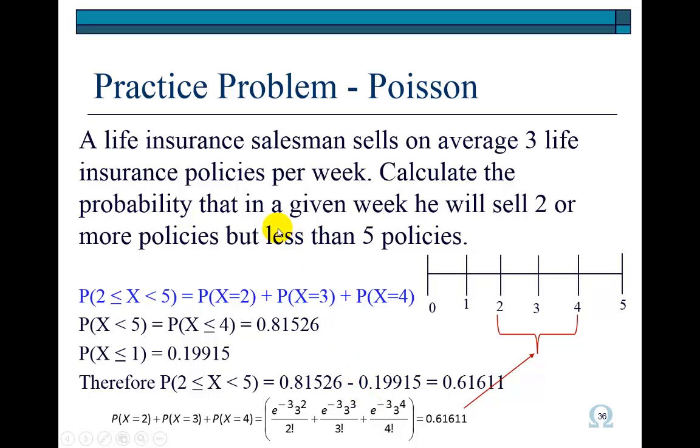Here's a quick practice problem. It says a life insurance salesman sells, on average, 3 life insurance policies per week. Calculate the probability that in a given week he will sell 2 or more policies but less than 5. Well, 2 or more, that's x greater than or equal to 2. However, x has to be less than 5. So expanded out, 2 or more would be x can take on the value of 2, 3, 4. However, we can't go further because it says x less than 5. So we can calculate these four probabilities individually, which is what I did right here, and then add them together to get 0.6161.